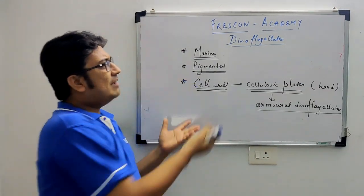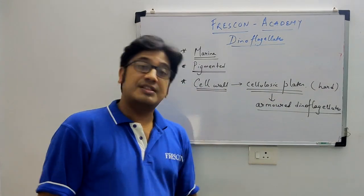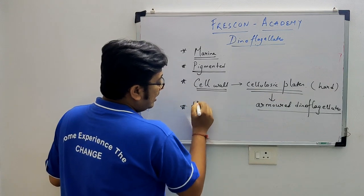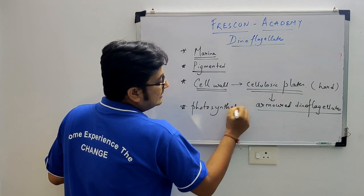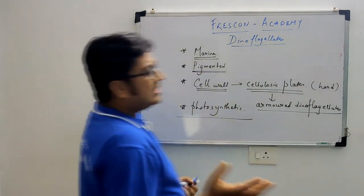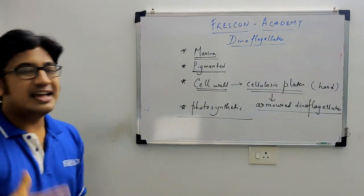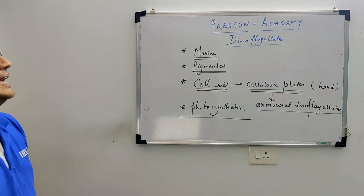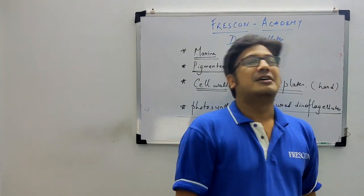So to summarize the major characteristics of Dinoflagellates: their habitat is marine, their nutrition is photosynthetic, they are pigmented with examples Gonyaulax and Gymnodinium, Noctiluca shows bioluminescence, and the cell wall is made of cellulosic plates — armored and very hard.